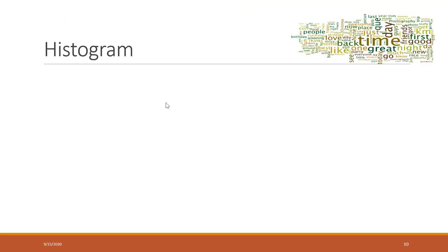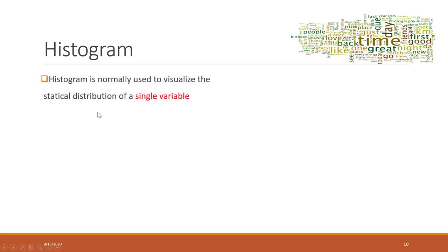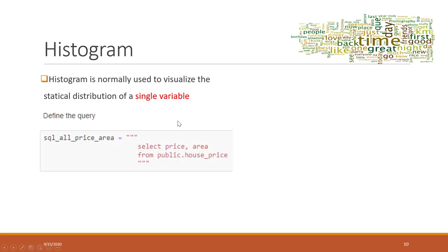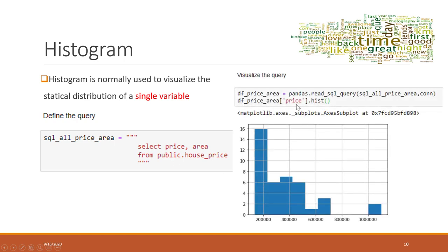Let's look at some other simple visualizations that we tried in the Python class. The first one is a histogram. A histogram is normally used to visualize the statistical distribution of a single variable. The procedure is: first define the query. Here we define a new query that selects all the price and area from our table. Then we select the price column only and call dot hist, which will create a histogram for us. It's very easy and pretty straightforward.